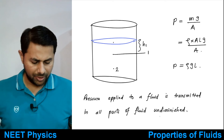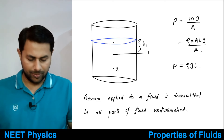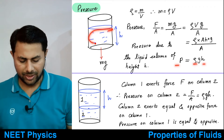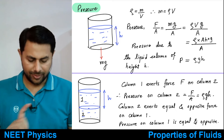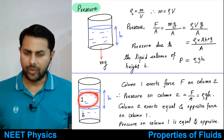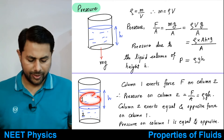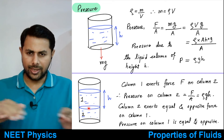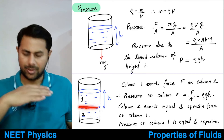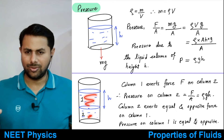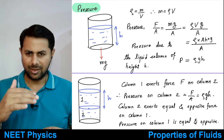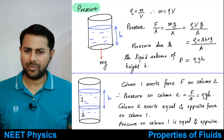The pressure is applied in all parts and in all directions in the fluid. Pressure equals rho g h — this is the pressure due to a liquid column of height h. If you consider any imaginary separation inside the fluid separating column 1 and column 2, column 1 exerts some pressure on column 2 — force per unit area — and according to Newton's third law the pressure would be equal and opposite.